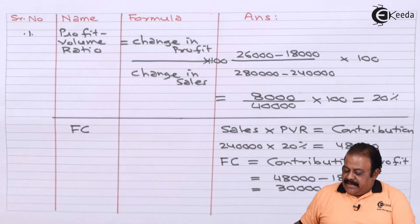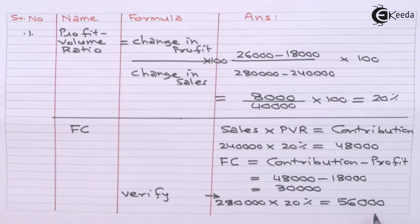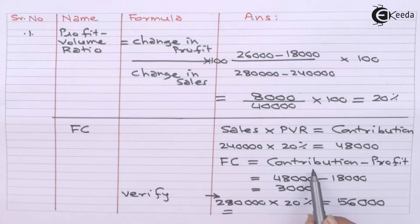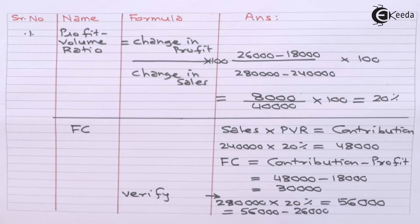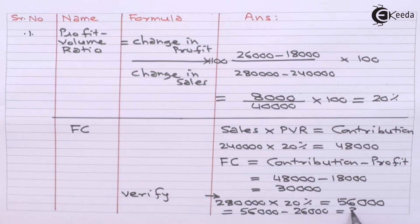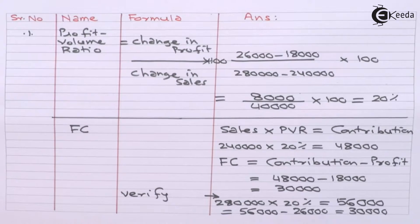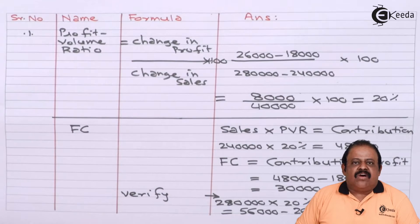To verify, for Year 2: ₹2,80,000 multiplied by 20% gives contribution of ₹56,000. Fixed cost equals contribution minus profit: ₹56,000 minus ₹26,000 equals ₹30,000. In both years the fixed cost is the same — ₹30,000 — which confirms our calculation. So the fixed cost is ₹30,000.